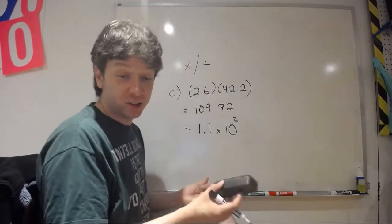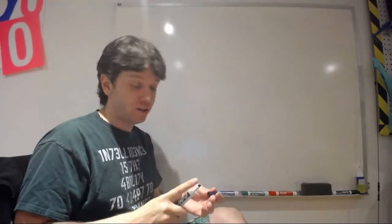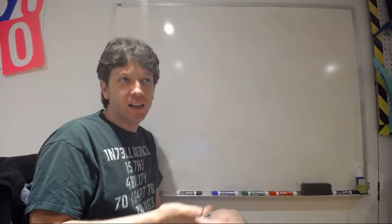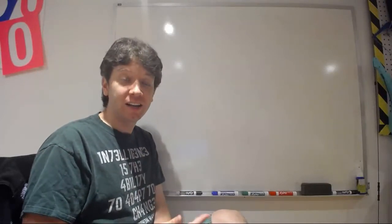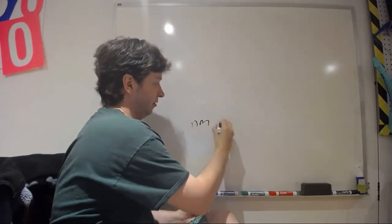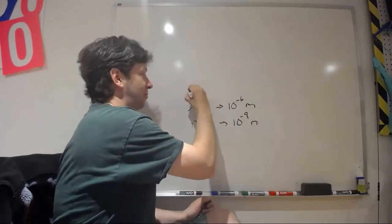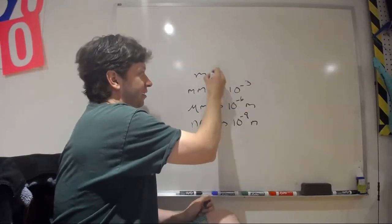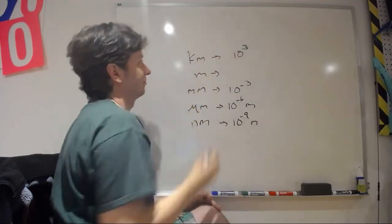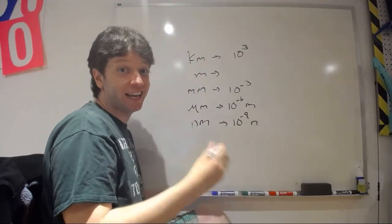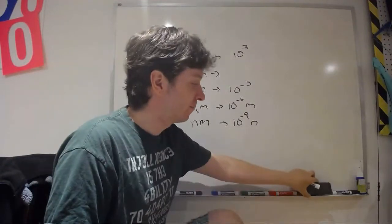Converting units is extremely important because in so many questions I will not give you the base SI unit. I might say light has a wavelength in nanometers — well you can't just throw nanometers into your calculations. You need to know that nanometers is 10⁻⁹ meters. You also have micrometers (10⁻⁶ meters), millimeters (10⁻³ meters), kilometers (10³ meters), megameters, gigameters, terameters — you can keep going up or down to picometers. You should be able to convert back and forth.